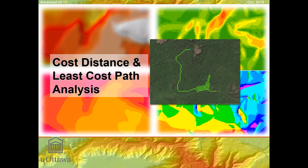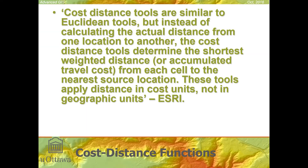The second type of distance is called cost distance, and cost distance is used to create least-cost paths through geographic space. The cost distance tools are similar to Euclidean distance tools, but instead of calculating the actual distance from one location to another for every cell, the cost distance tools determine the shortest weighted distance back to the source cell or cells. These tools apply distance and cost units rather than geographic units of Euclidean distance.